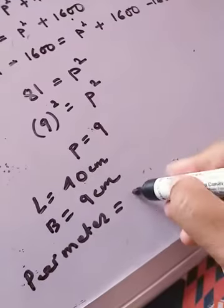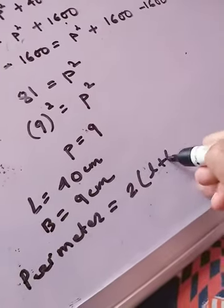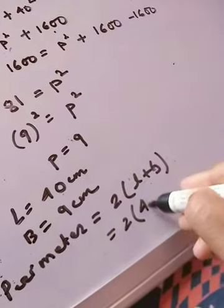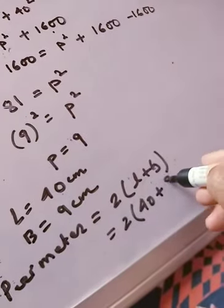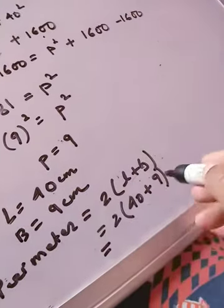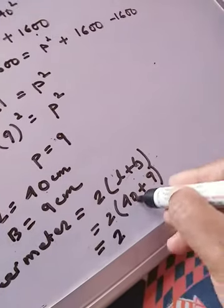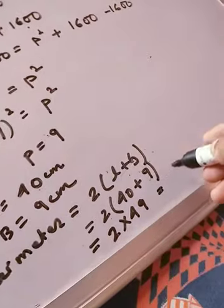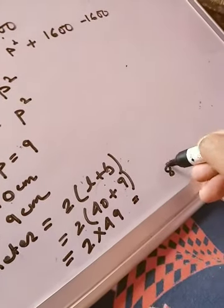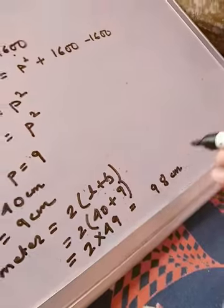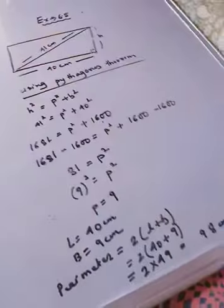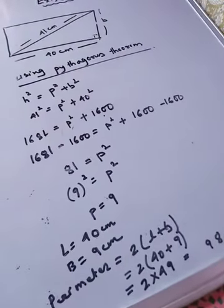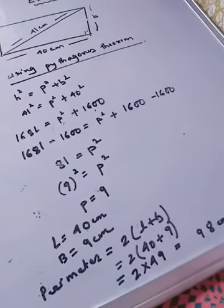The perimeter formula is 2 times (length plus breadth). In place of length we put 40 and in place of breadth we put 9. According to BODMAS we solve the bracket first: 40 plus 9 is 49, then 2 times 49 is 98 centimeters. So the perimeter of the rectangle is 98 centimeters. Let's move on to question number eight.